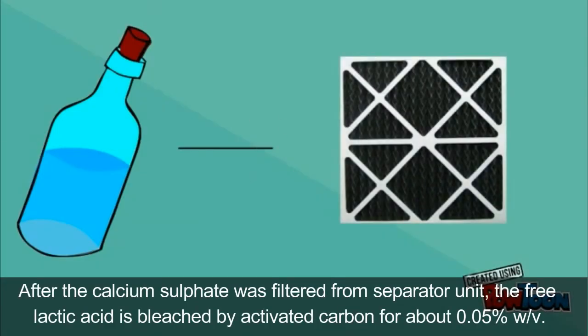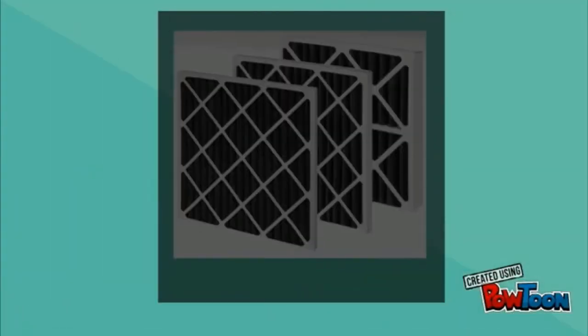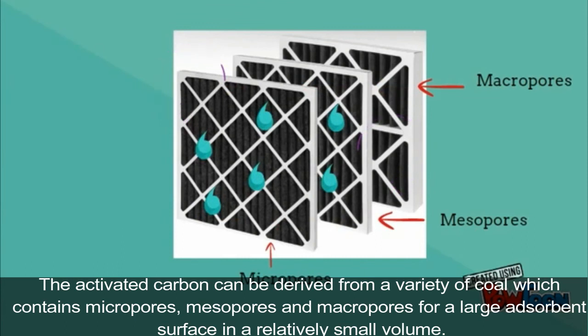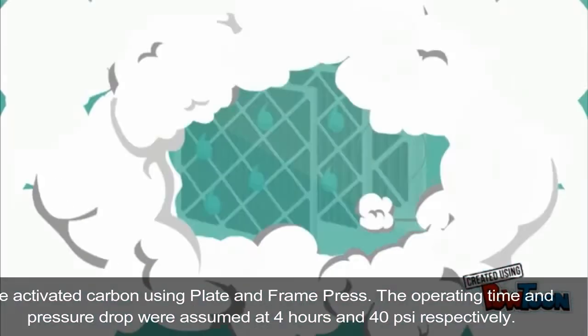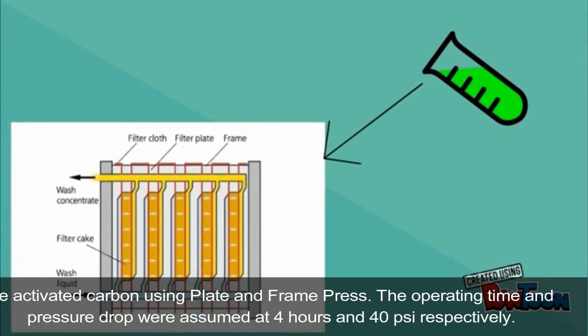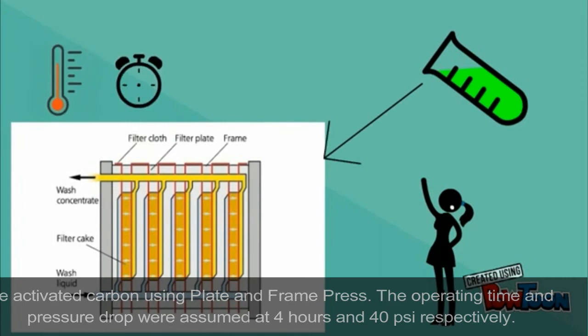After the calcium sulfate was filtered from separation unit, the free lactic acid is bleached by activated carbon at about 0.05% weight per volume. The activated carbon is removed using plate and frame filter press. The operating time and pressure drop will assume at 4 hours and 40 psi respectively.